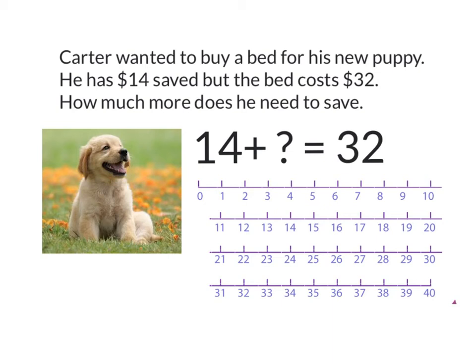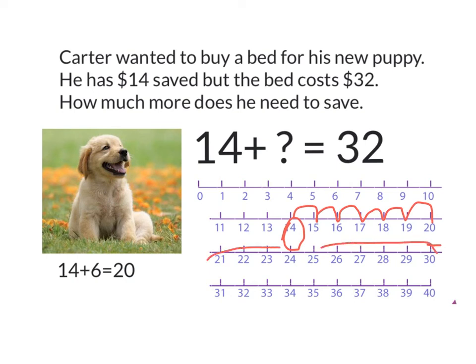I'm starting on 14 because that's how much money Carter's got to start. Now I'm going to partition up through my tens. My nearest ten from 14 is here at 20. So I'm going to jump 1, 2, 3, 4, 5, 6 to get to 20. But I'm only at 20 and I need to get to 32. I know that if I jump 10 more from 20 that's going to get me to 30, so I'm going to jump from 20 up to 30.